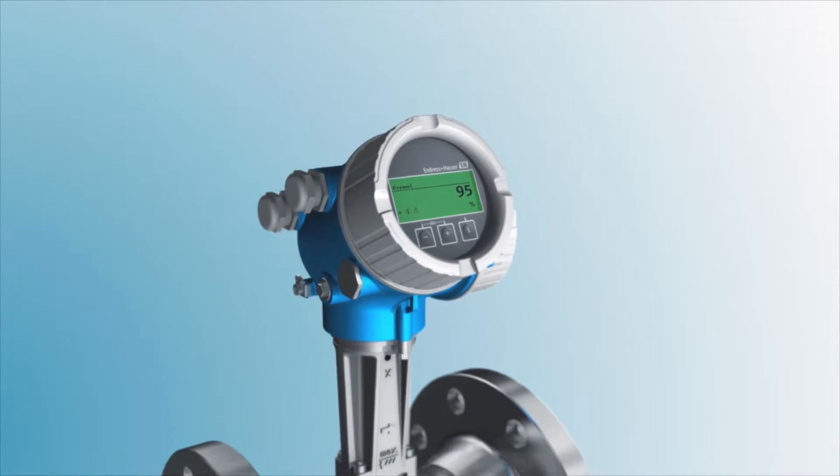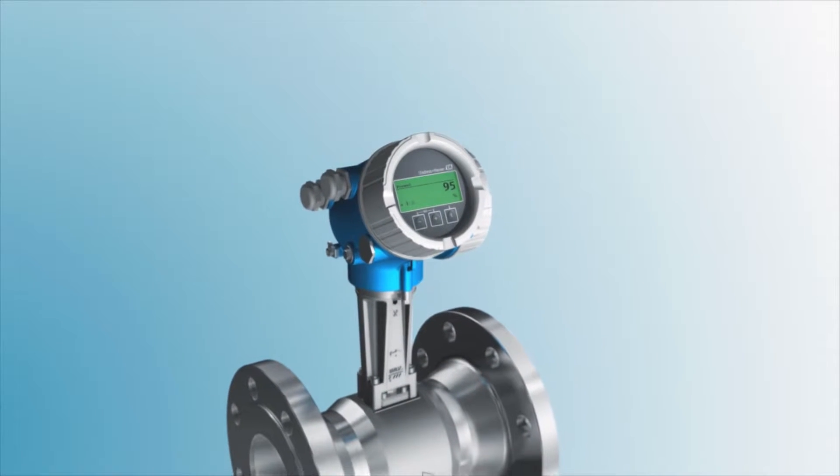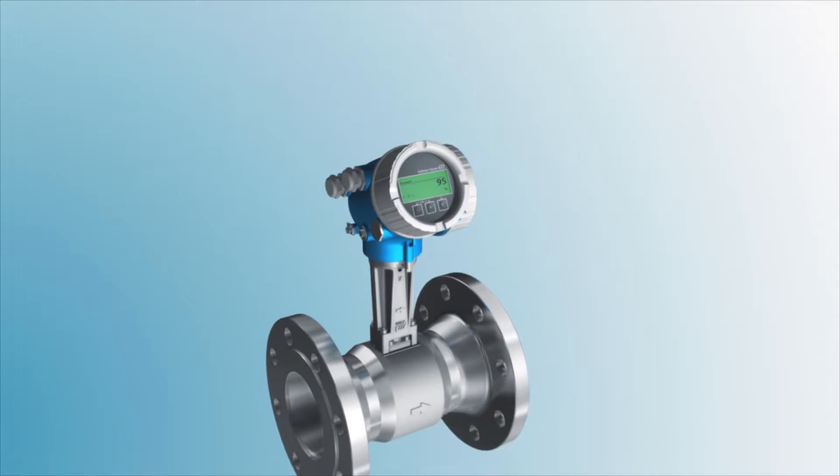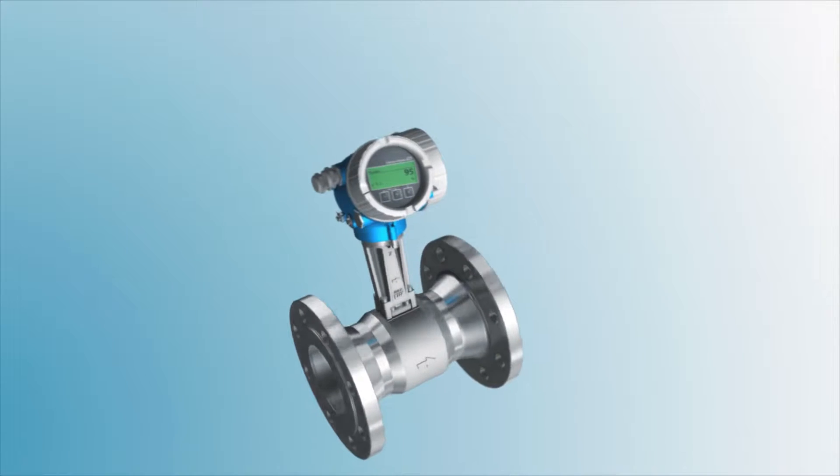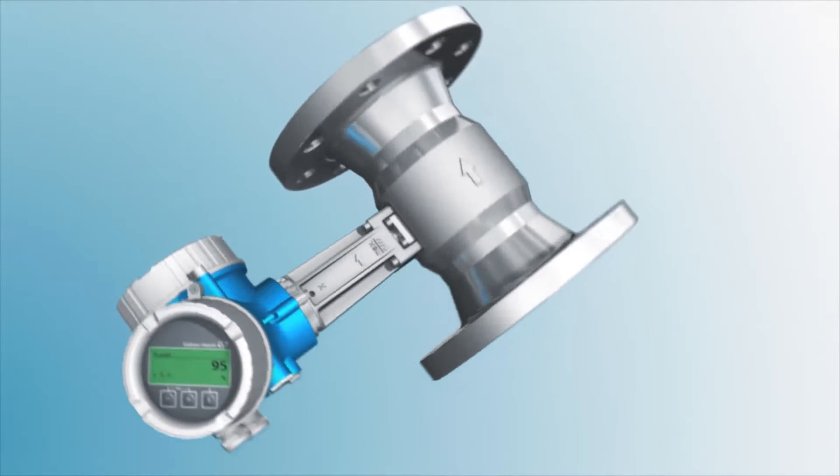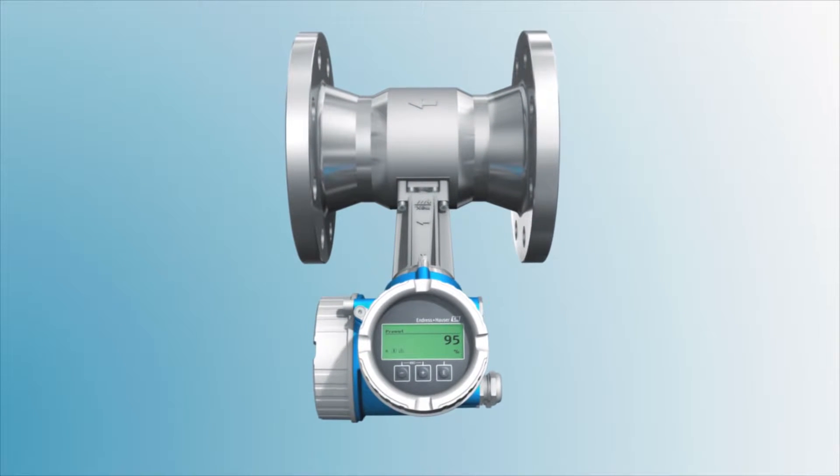Prowold 200 is unique. It detects wet steam and condensate buildups in the pipe, thus ensuring optimal safety in your steam pipe network. But how does Prowold 200 actually measure wet steam and the resulting condensate?